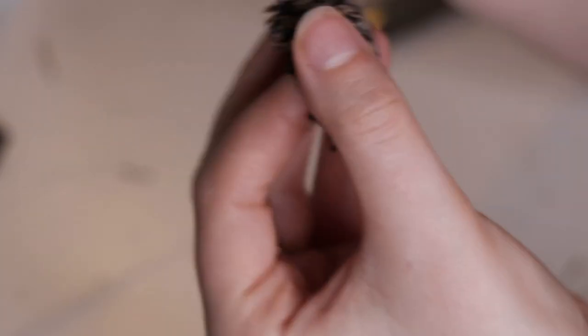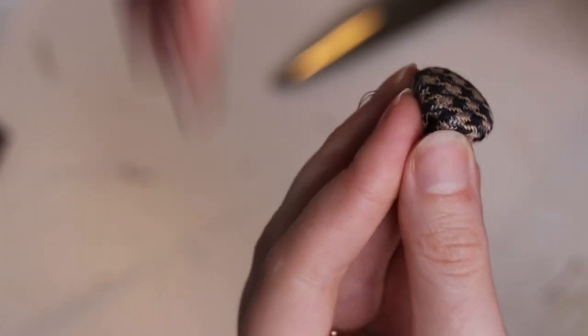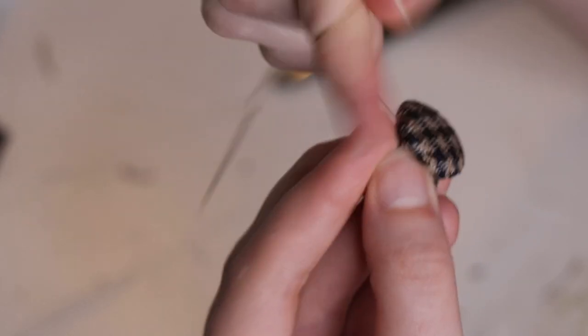You're going to gently pull on this and it will act like a drawstring. Close around the button. Pull snug. Don't pull too tight because your stitches can rip out.